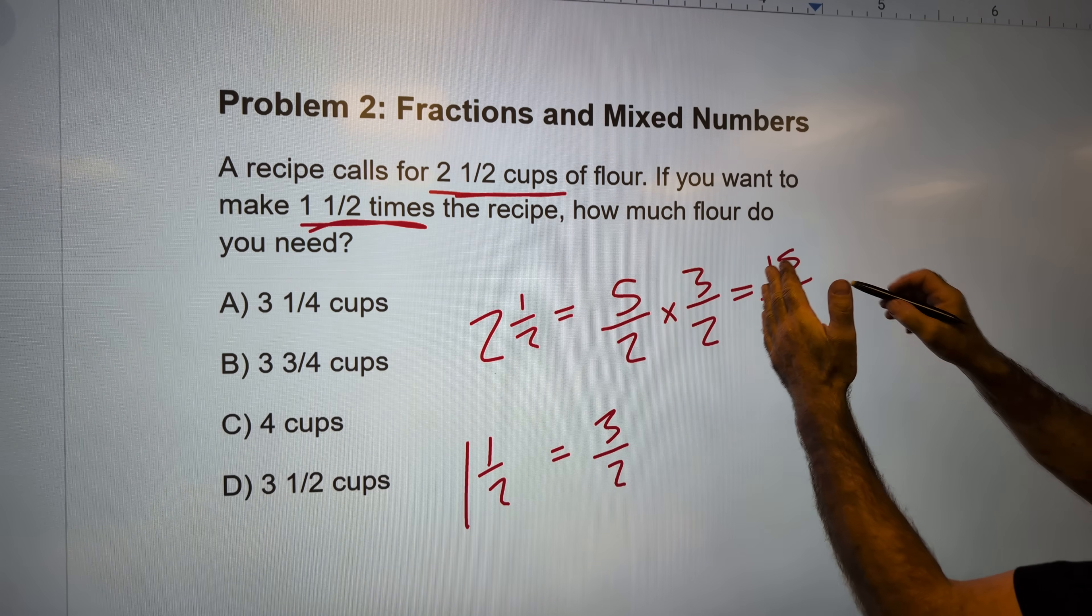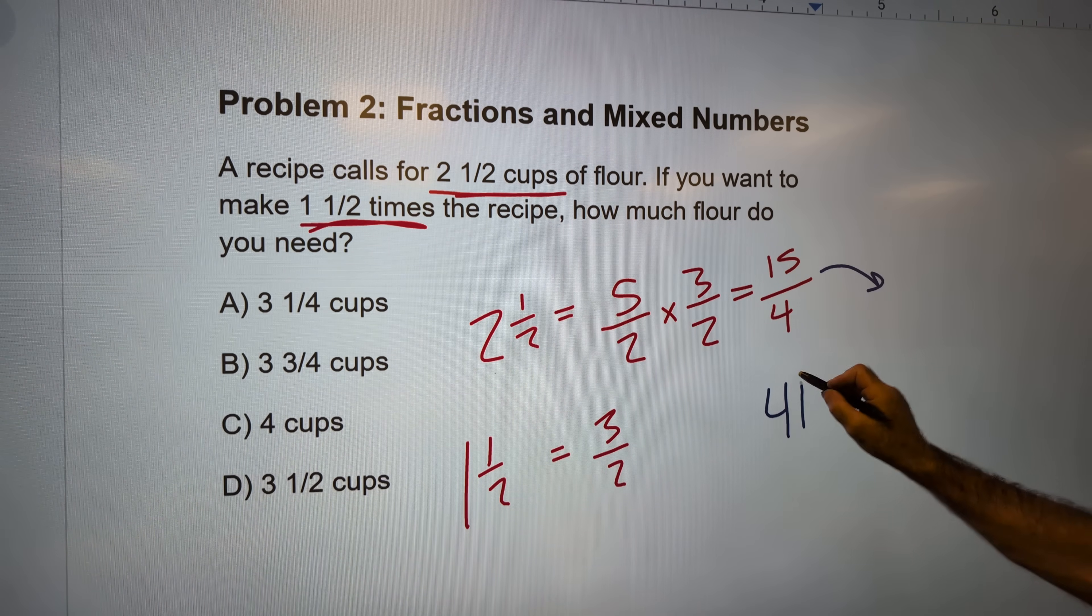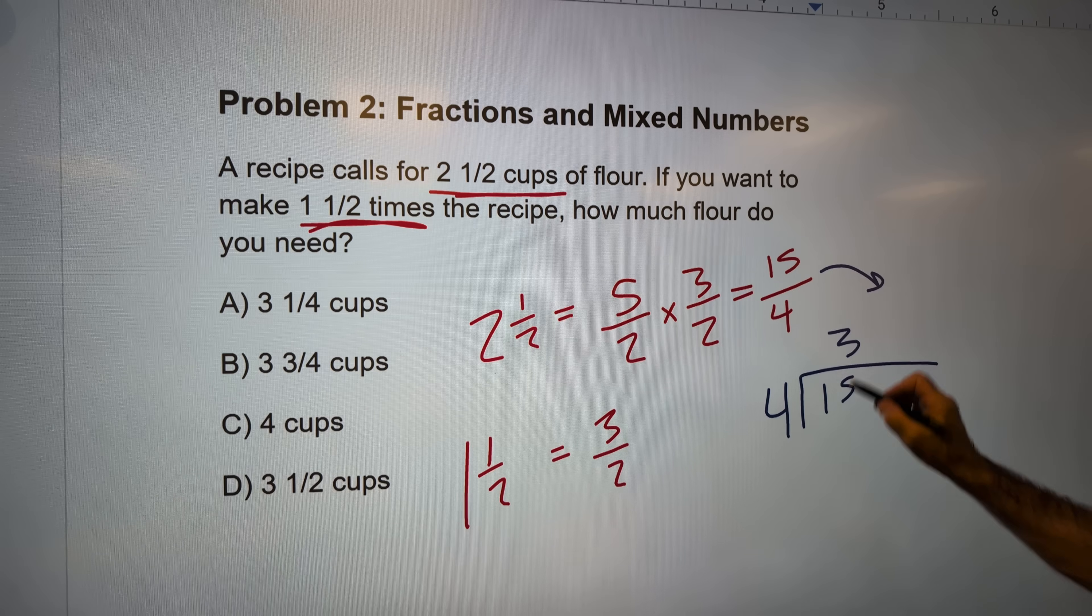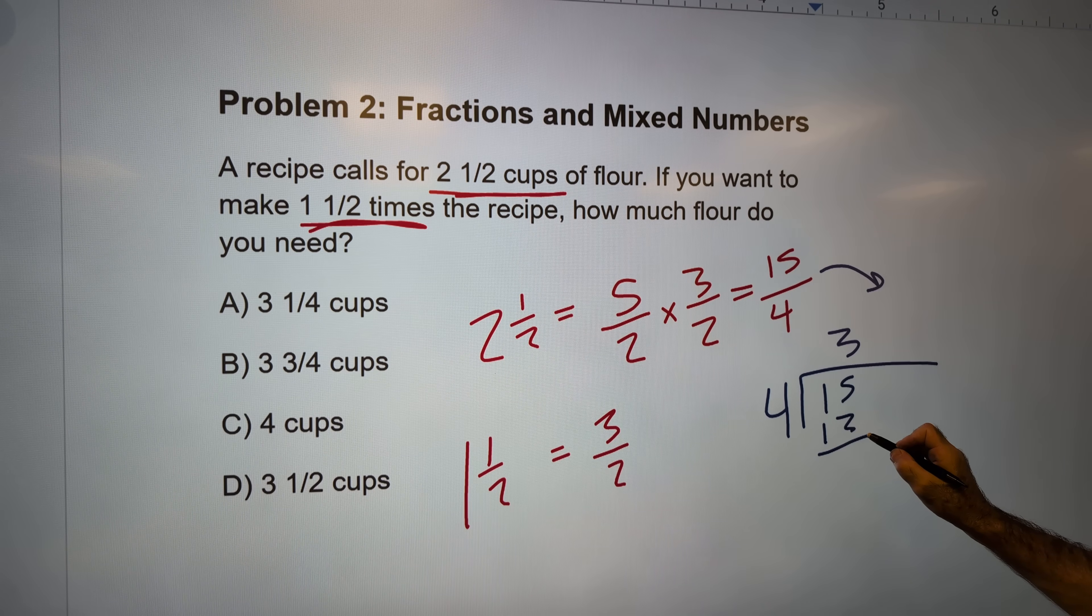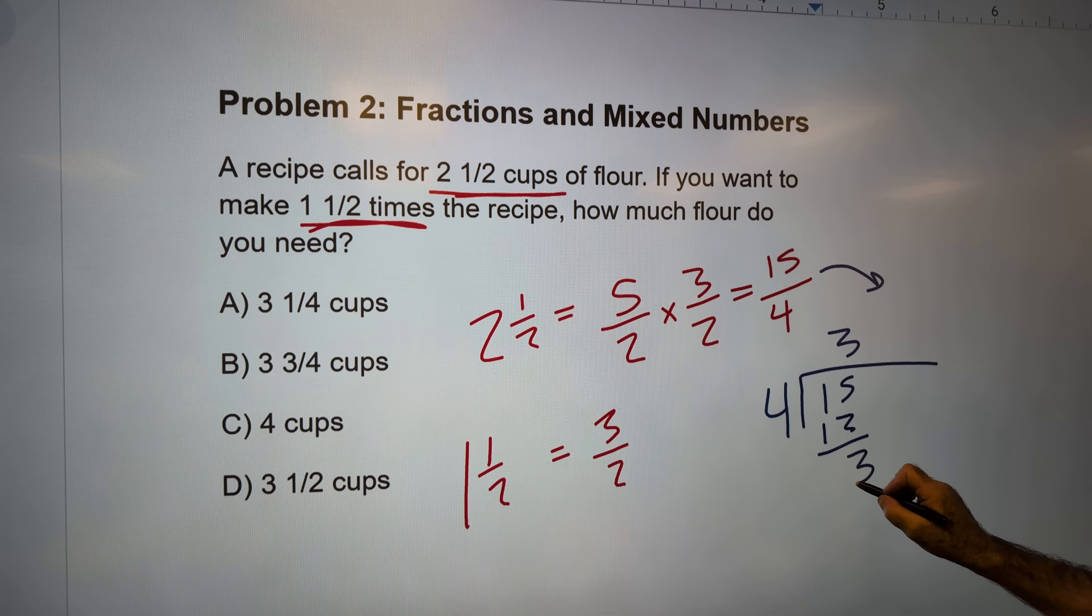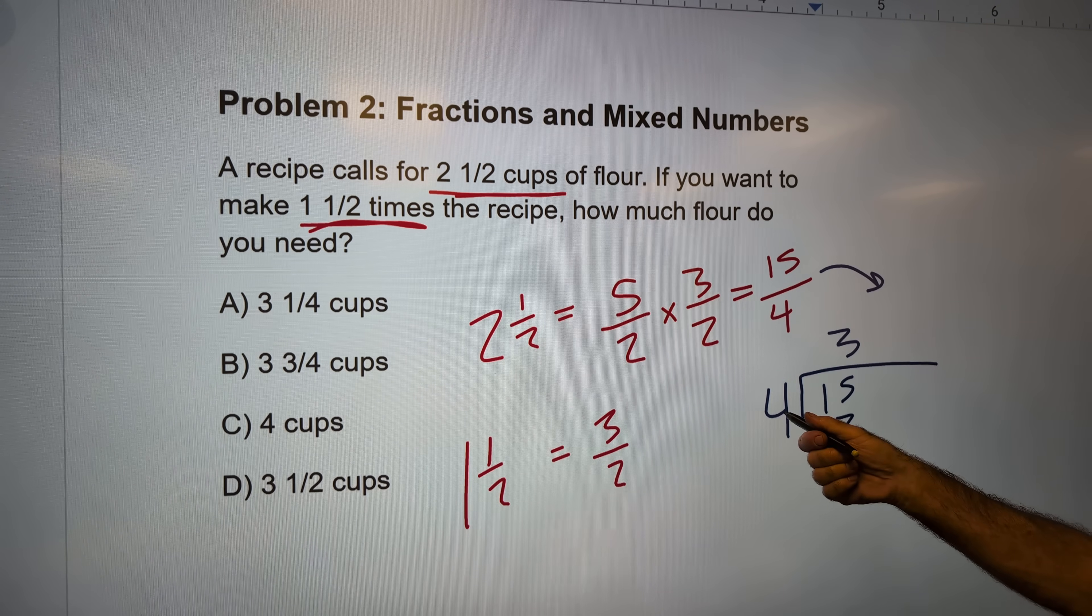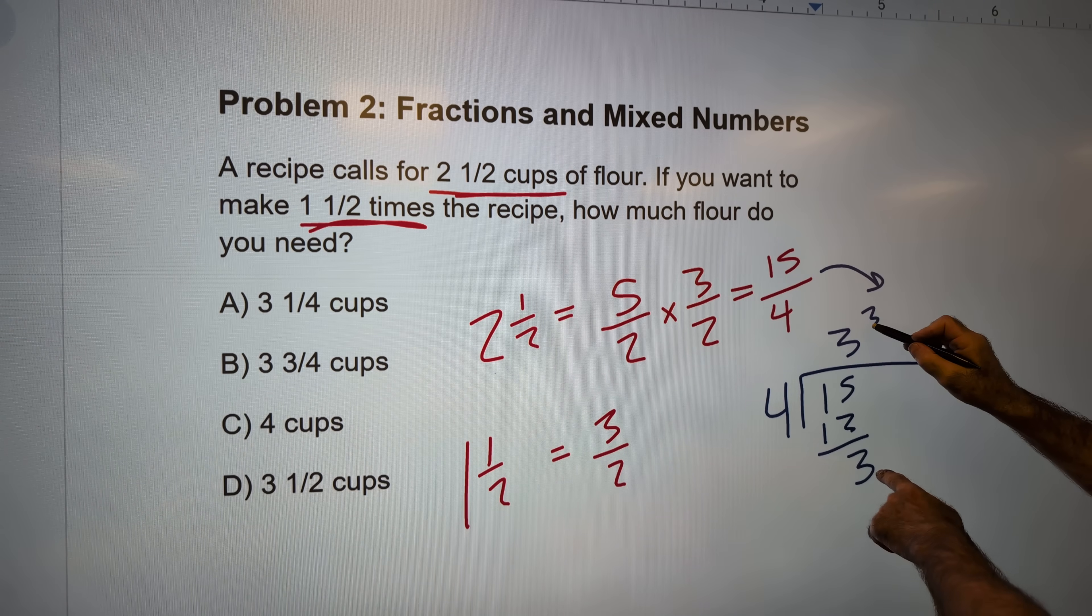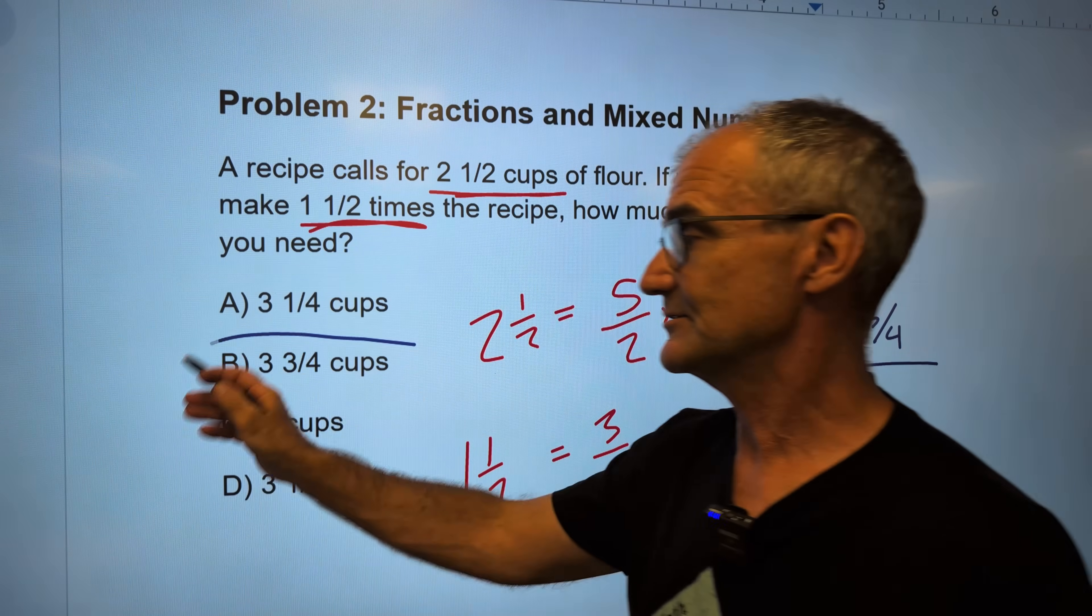I think of this fraction like this. It falls over that way to get 4 into 15. Well, 4 goes into 15 three times. 4×3=12. 15 minus 12 is 3. So I have 3 with 3 left over and I'm going 4 into it. So this is the same as 3¾. Correct answer. Answer B right here.